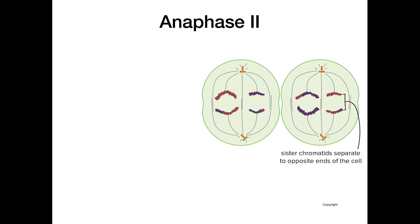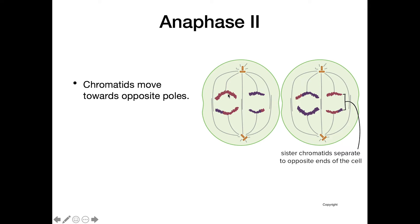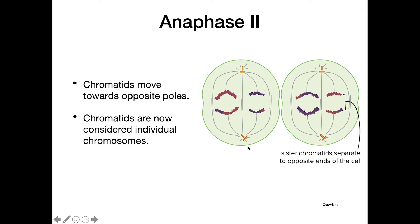In anaphase 2, what's different from anaphase 1 is that now it's the sister chromatids being pulled apart instead of the homologous chromosomes. The chromatids move toward opposite poles of the cell. Importantly, each of these chromatids is now considered an individual chromosome — that's something really important to remember.